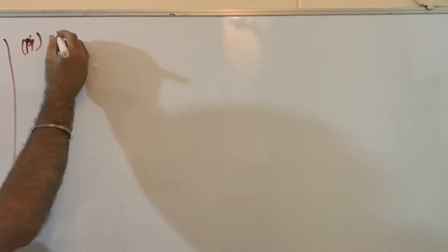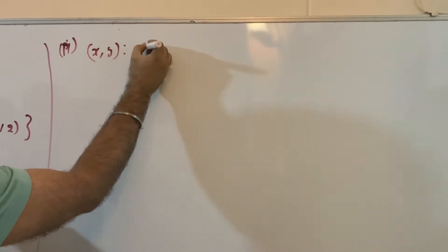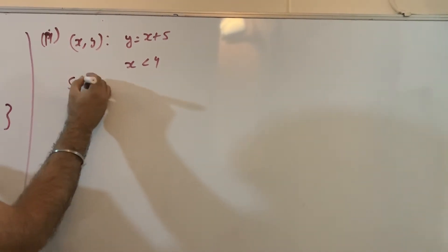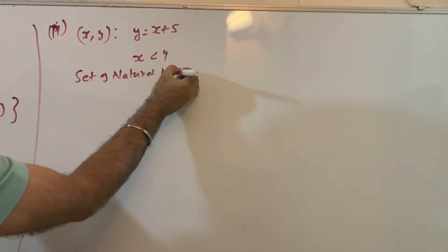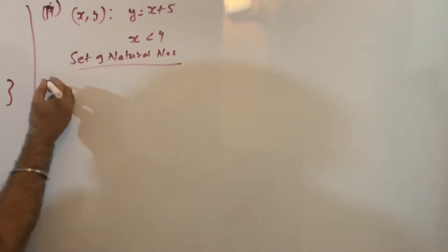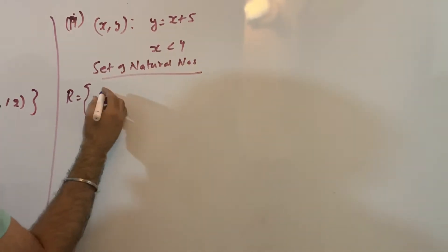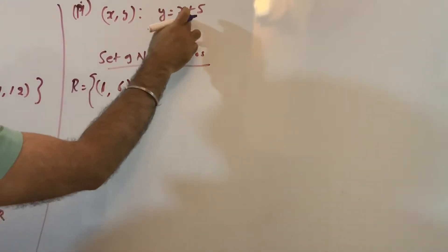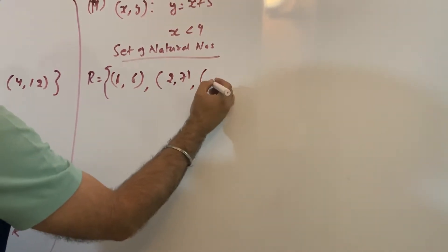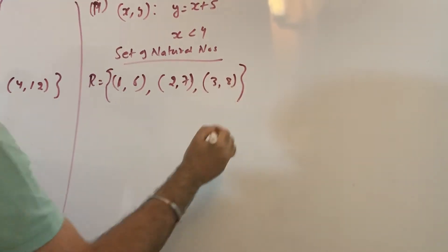Say for example, the relation R is the set of (x, y) such that y is equal to x plus 5 and x is less than 4, on the set of natural numbers. So find the relation: if x is 1, y will become 6. If x is 2, y is 7. If x is 3, y is 8. Like this you can find the pairs.